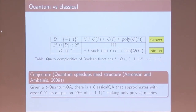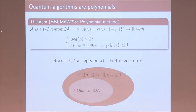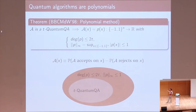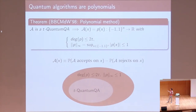Aaronson and Ambainis observed that quantum algorithms have structure: the output of a quantum query algorithm is a polynomial, bounded in degree by twice the number of queries and bounded in infinity norm (the absolute value of its values on the Boolean hypercube is at most one). Here, the output means the difference between acceptance and rejection probabilities, which is always at most one in absolute value. So quantum algorithms are polynomials that are bounded in degree and bounded in infinity norm.